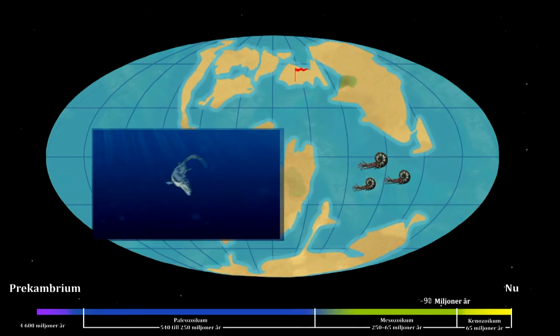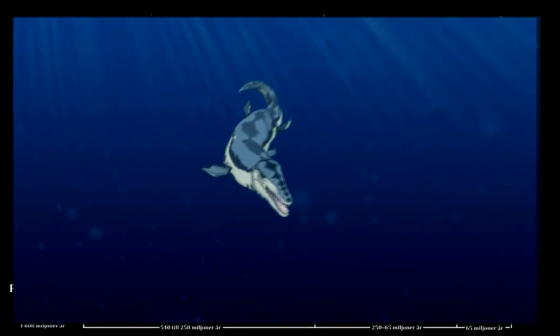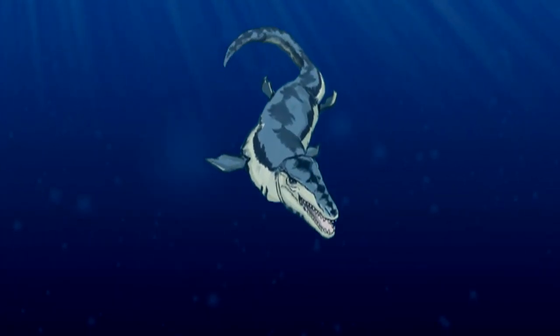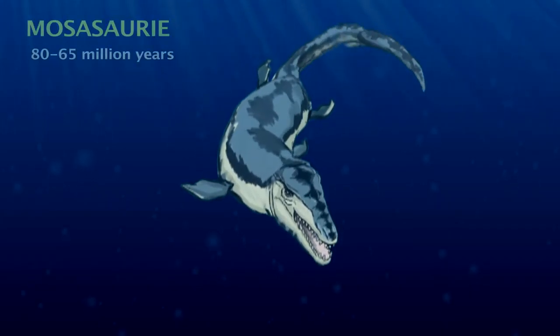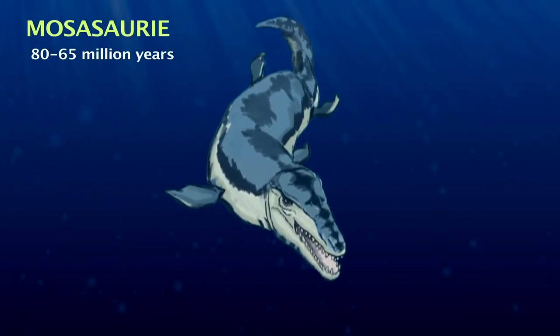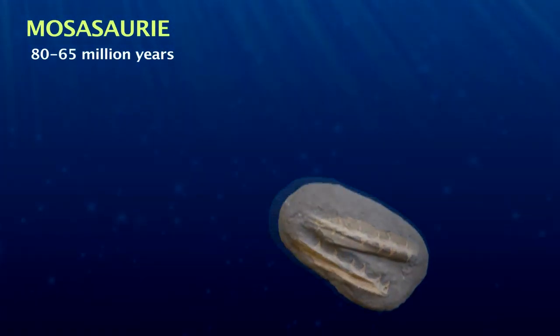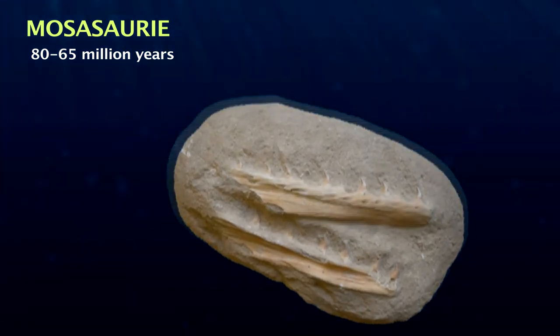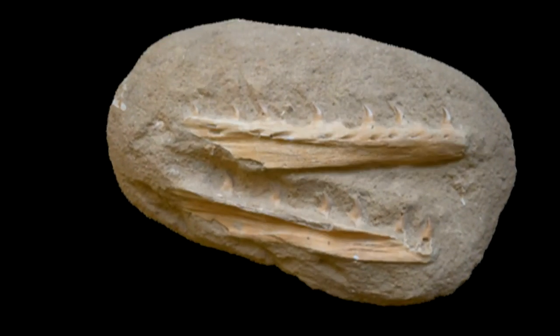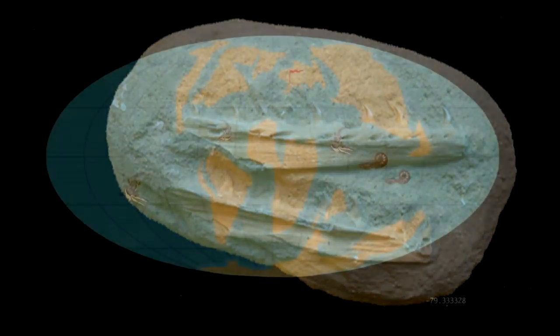Here is a marine lizard that breathed air and was an accomplished swimmer. It lived as a predator, had sharp teeth, and could be over 17 metres long. Nice that they disappeared.